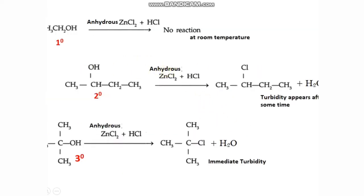Here we consider some examples. This primary alcohol, CH3CH2OH, does not undergo reaction with Lucas reagent at room temperature. This secondary alcohol, butane-2-ol, will react with anhydrous zinc chloride and concentrated HCl — that is, the Lucas reagent — and we get 2-chlorobutane. That 2-chlorobutane appears in the form of turbidity after some time.